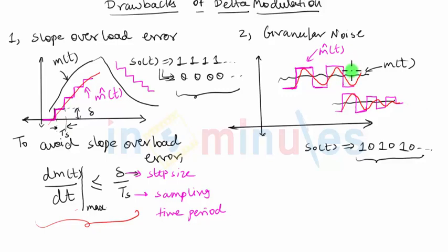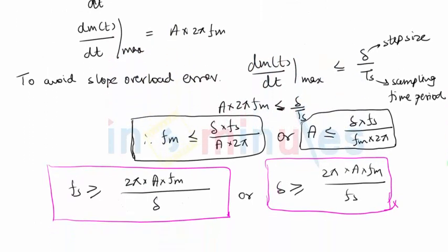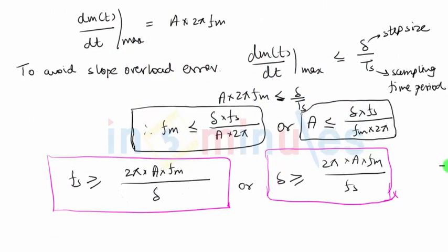With fixed step size, and that too of large value, the granular noise will be very large even though we will be able to reduce the slope overload error. Hence when it comes to designing a good delta modulator, there should not be any restriction in terms of step size. The step size which is used should be of small value to keep the granular noise minimum.